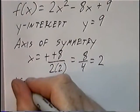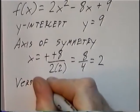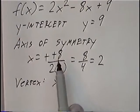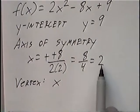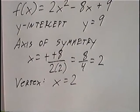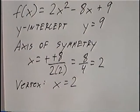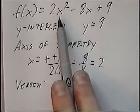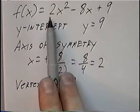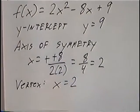For the vertex, x = -b / 2a, which is the same as the axis of symmetry. So the vertex x equals 2. For the y-value, we'll solve by plugging 2 into the original equation, and f(x) will give us the y-value for the vertex.